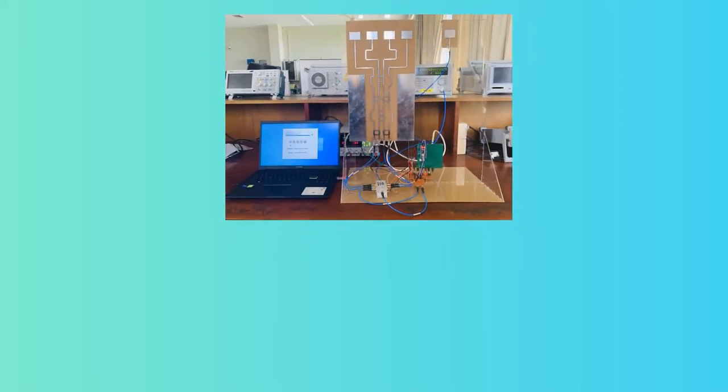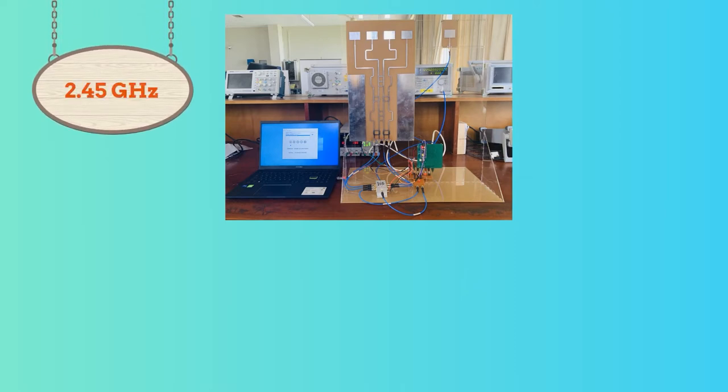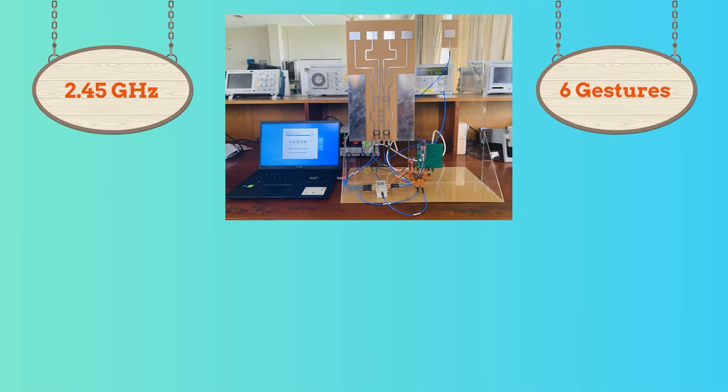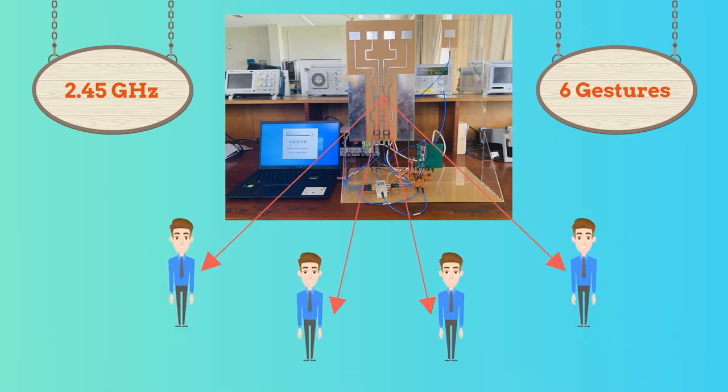In this project, we designed a directional sensing Doppler radar system operating at 2.45 GHz to detect six hand gestures from four directions in real time. The directions are plus 45 degrees, plus 12 degrees, minus 12 degrees, and minus 45 degrees.